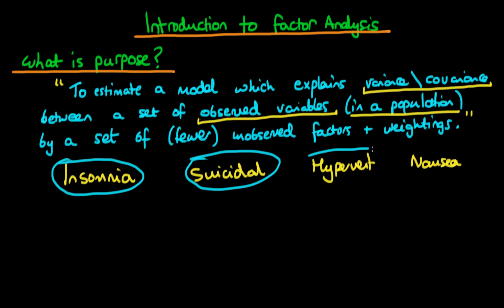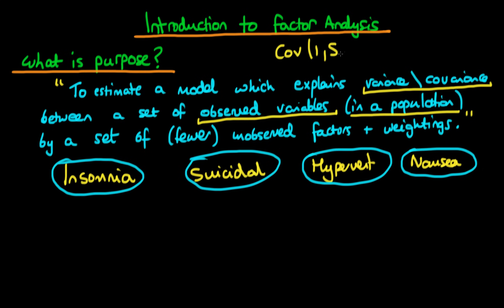Typically with this data we're dealing with a sample — we're not dealing with the entire population's data. And within that sample there is a degree of variance and covariance between this set of variables. For example, there might be some sort of covariance in our sample between insomnia and suicidal thoughts, which is something like 0.3. And what we're trying to do is come up with a model which will explain that covariance in the population.